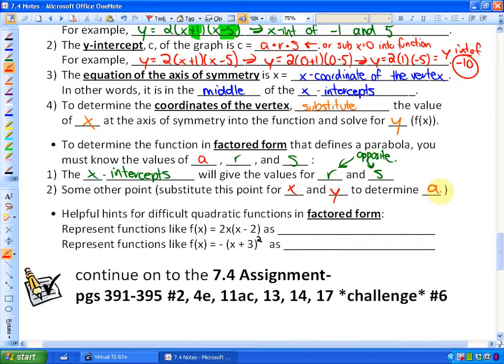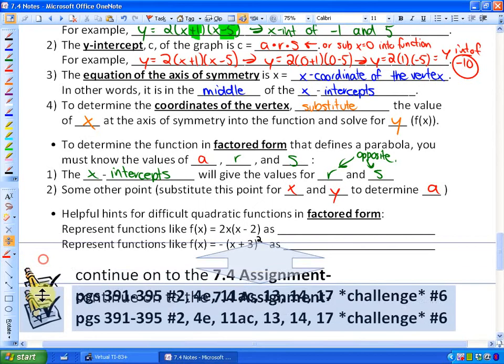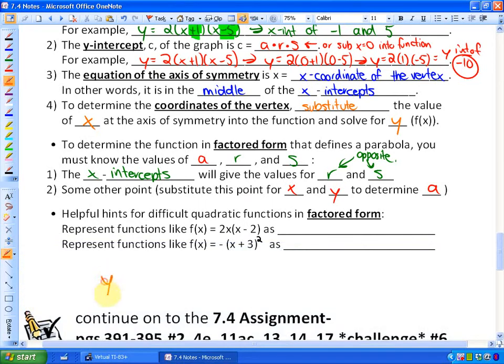Finally, some helpful hints. If your function does not look like y = a(x+r)(x+s), there are ways to get around that. For example, represent functions like f(x) = 2x(x-2). You'll notice there's not two sets of brackets, but you could represent this x as x+0.